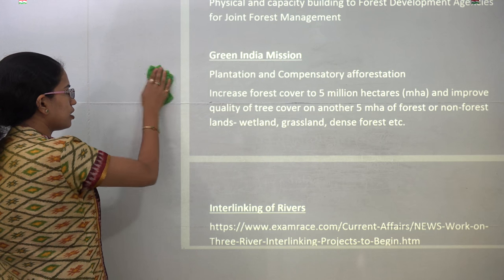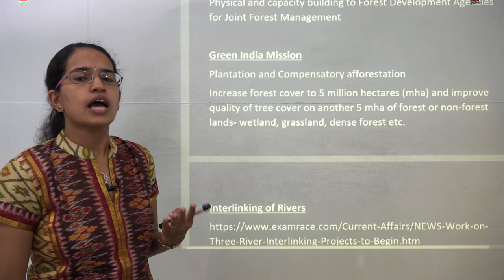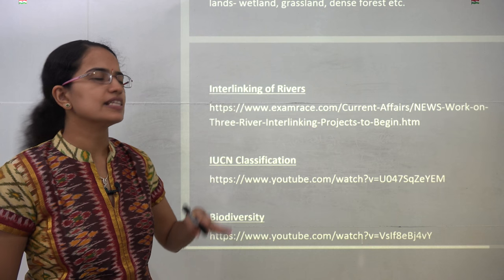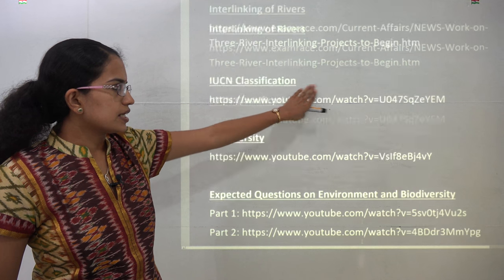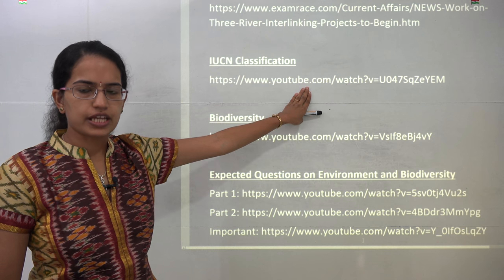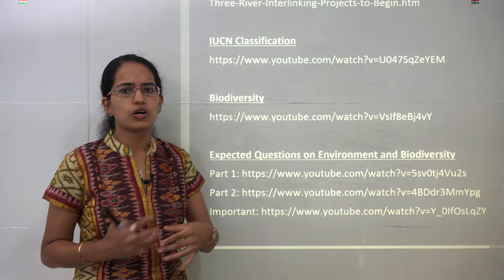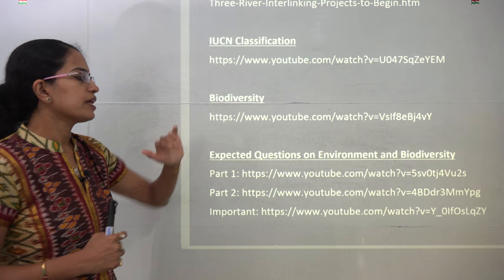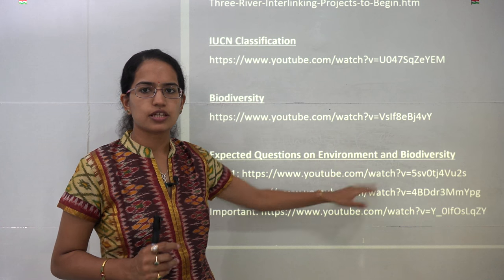The next topic is the interlinking of rivers. Recently, three river interlinking projects have been proposed: Ken-Betwa, Daman-Ganga-Pinjal, and Par-Tapi-Narmada. IUCN classification has been taken up in a separate lecture and is very important. Biodiversity is also important — one or two questions appear on it regularly. We have already covered some of these topics in other classes on expected questions on environment.